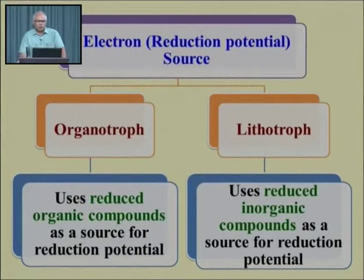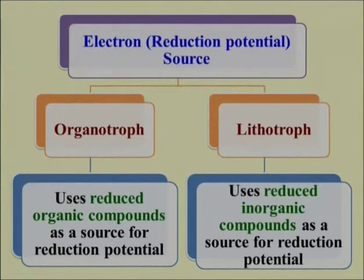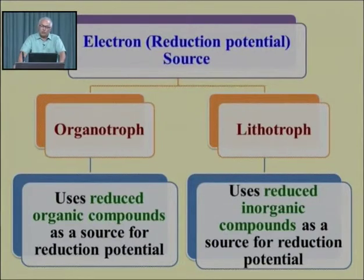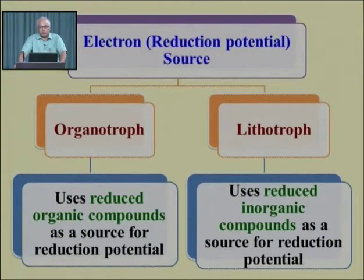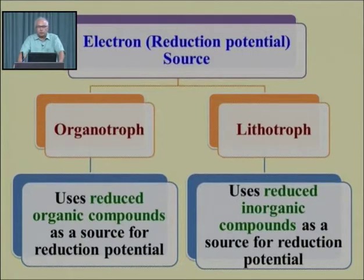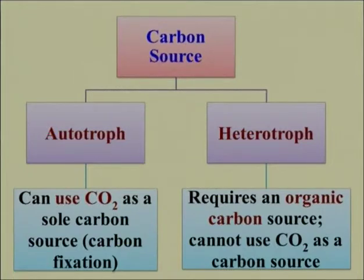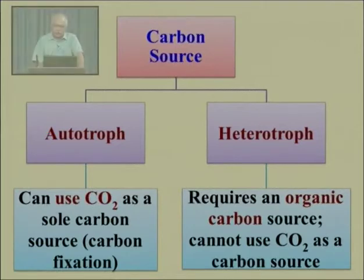Regarding electron transport chain and reduction potential, organisms are also classified as organotrophs and lithotrophs. Organotrophic organisms use reduced organic compounds as a source of reduction potential. This classification is based on the types of compounds used as reduction potentials. For carbon source classification: autotrophs can use carbon dioxide as their sole carbon source, while heterotrophs require organic carbon.